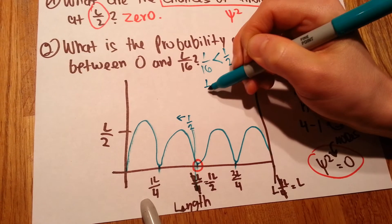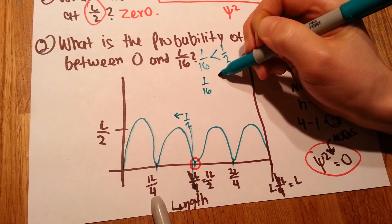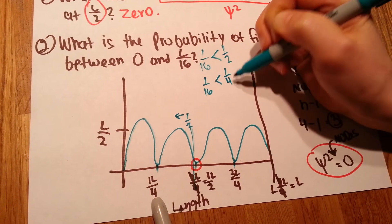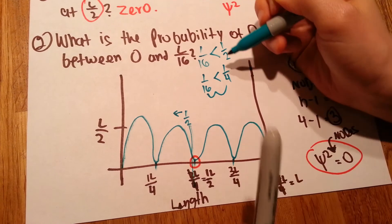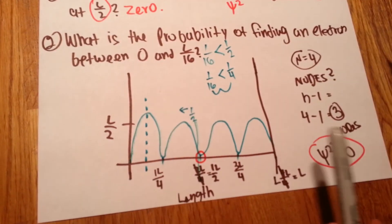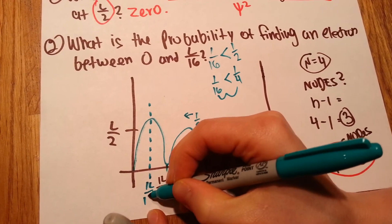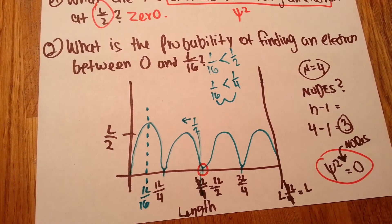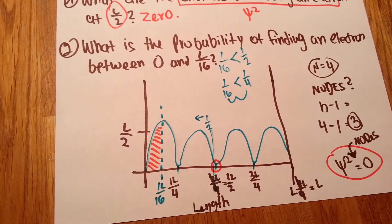Well, 1 over 16, is that bigger or smaller than 1 fourth? That is, again, smaller than 1 fourth. As a matter of fact, 1 over 16 is half of 1 over 4th. So if we half this heel, we find that this is 1L over 16. So they want to know what's the probability of finding an electron in this area.